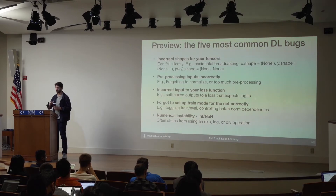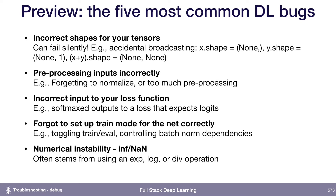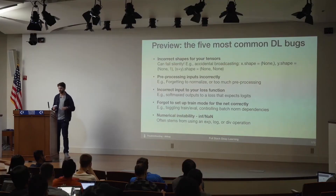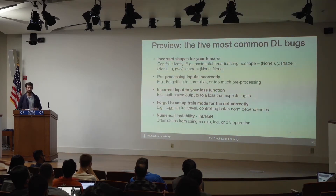A lot of times data augmentation will actually make the task unsolvable. Incorrect inputs to your loss function is another bug — in TensorFlow and PyTorch, loss functions expect inputs in a certain form. If you're doing a softmax, either you want the inputs to be the raw logits or you want to have already taken the softmax. Just be careful about which one your loss function expects.